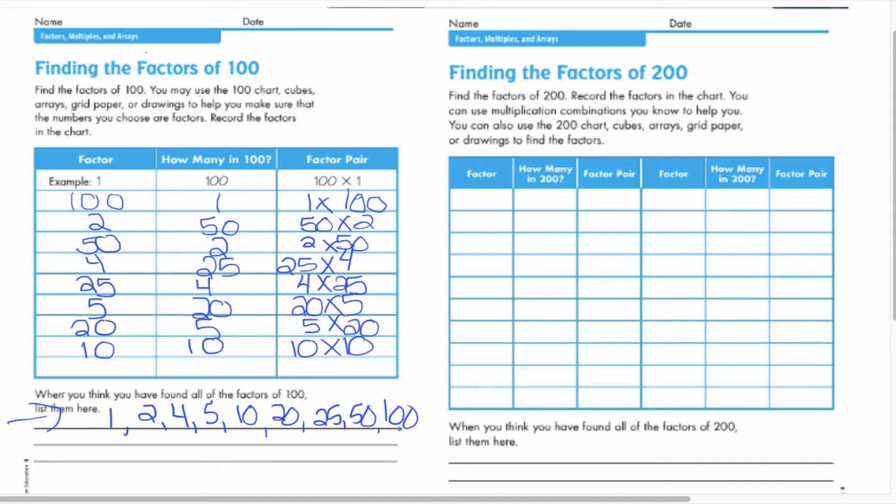We also discussed that the factors that make 100 can also be used for the factors of multiples of that number. So we're going to look at the number 200. We also talked that I can double 100 to make 200. So we're going to use that information to use the factors of a hundred to help us out.